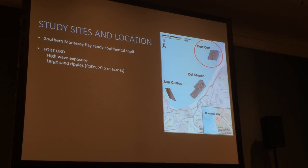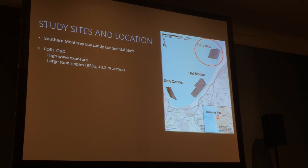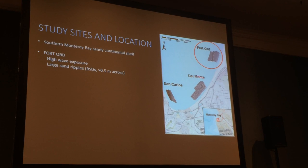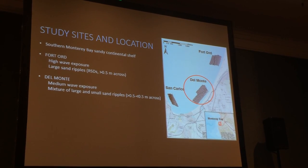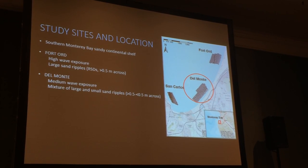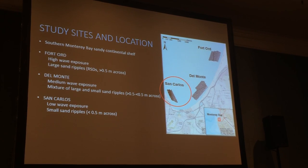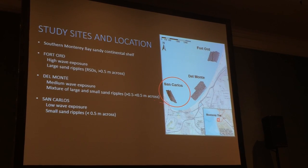Our study sites are located in the southern Monterey Bay Sandy Continental Shelf. Fort Ord is our most northern site, characterized by high wave exposure and large sand ripples — a sonar image shows one very large rippled scour depression. Del Monte is our medium wave exposure site, characterized by a mixture of large and small sand ripples, greater than and less than 0.5 meters across, meaning a mixture of RSD and smaller bed form types. San Carlos was characterized by low wave exposure with no RSD depressions — only small sand ripples.